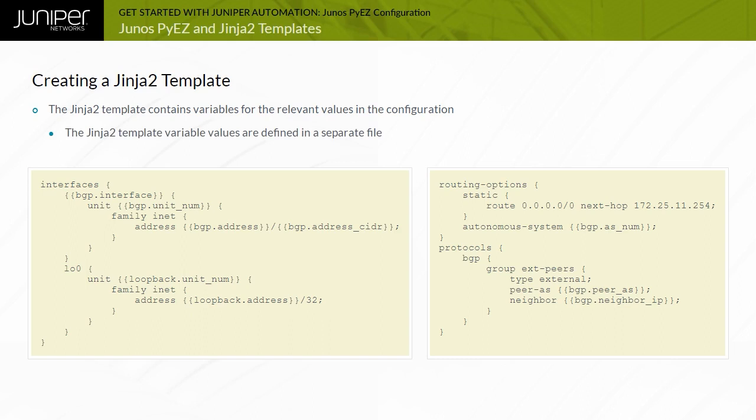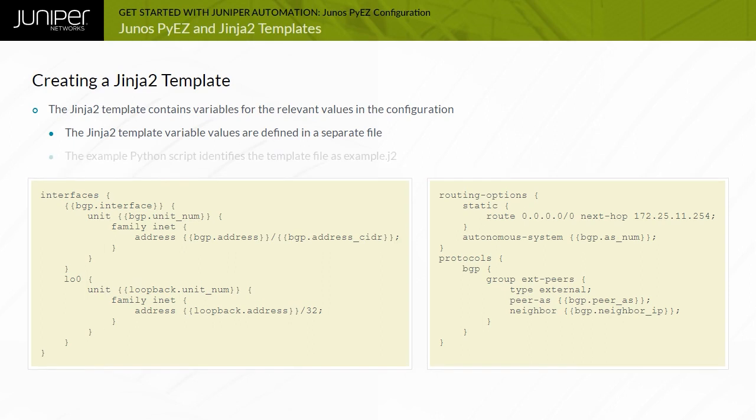The YAML variable files will be divided into two sections, and the BGP and Loopback keys specify the exact section where the variable is located in the files. In this example, the template file is saved using a .j2 extension, but you can use any file extension that you want.